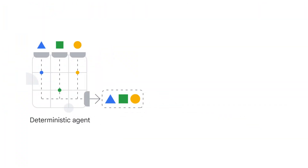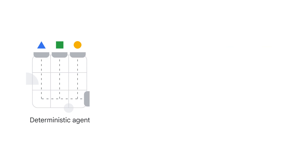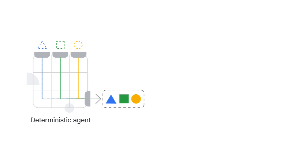There are generally two kinds of agents: deterministic and generative. Those agents that you described could be referred to as traditional or deterministic agents. A deterministic agent is an agent that is based on predefined paths and actions. It's typically workflow-based and event-driven, and it offers a high degree of control and predictability.